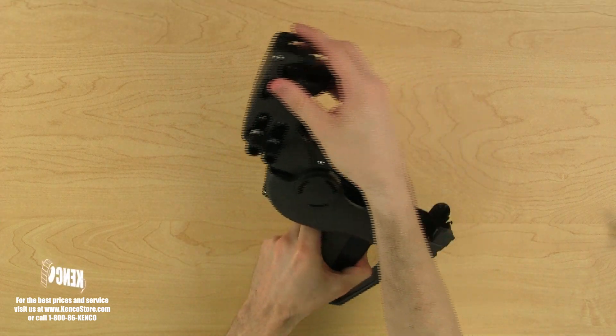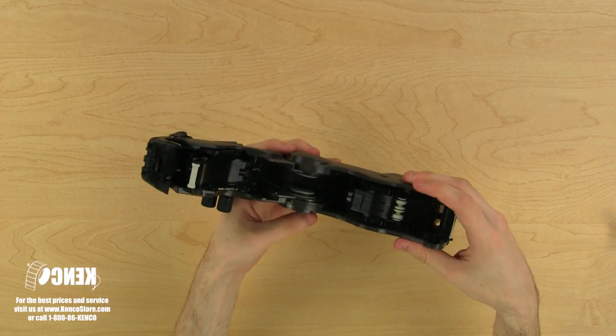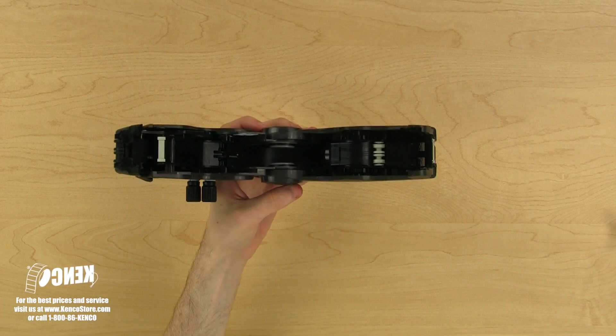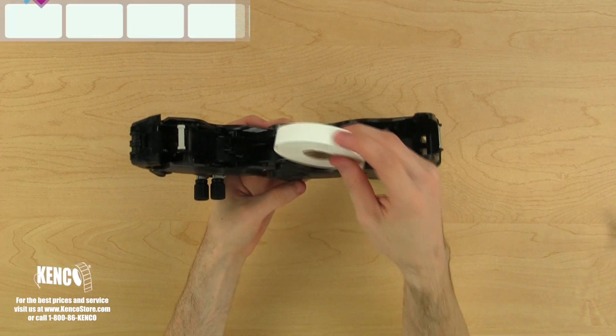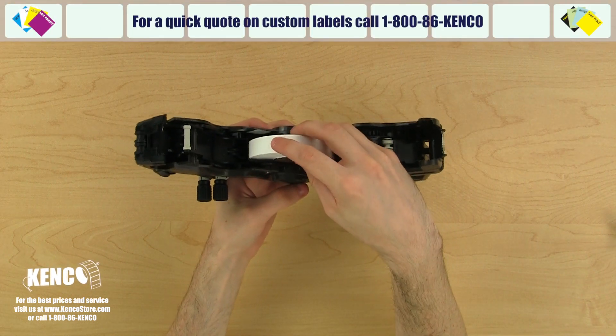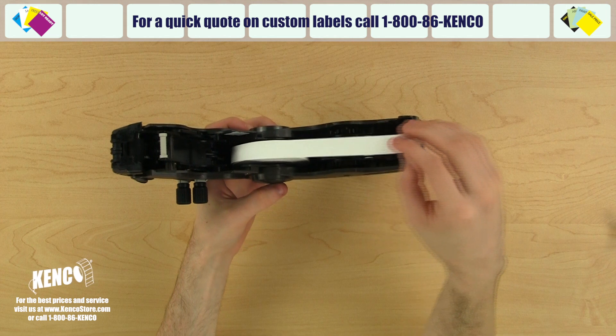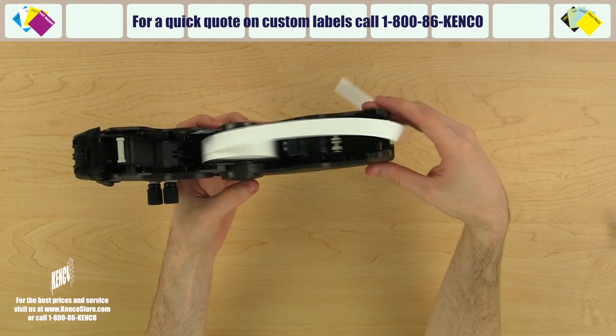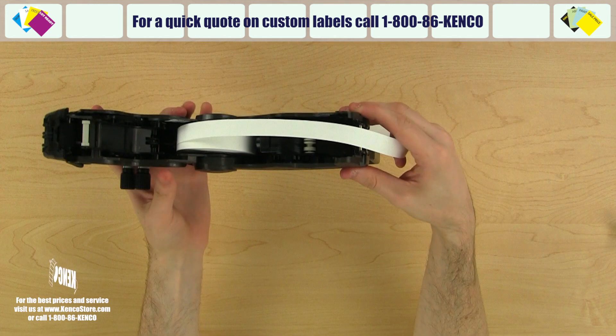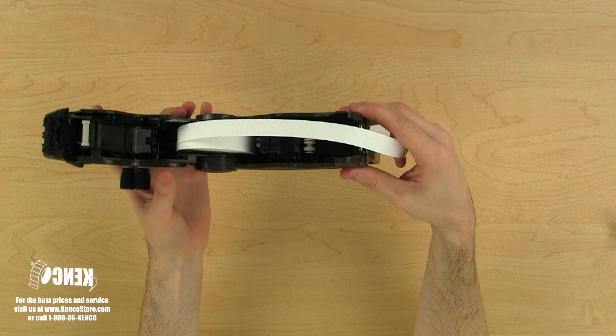Let's start by opening up the label housing cover. Let's grab a roll of labels and place it in the label cavity so that the labels are winding from the back and over the top of the roll. These blank labels in assorted colors can be custom printed with your information and are available through Kenco. Push the labels in firmly and the roll should lock right onto the core holding discs.